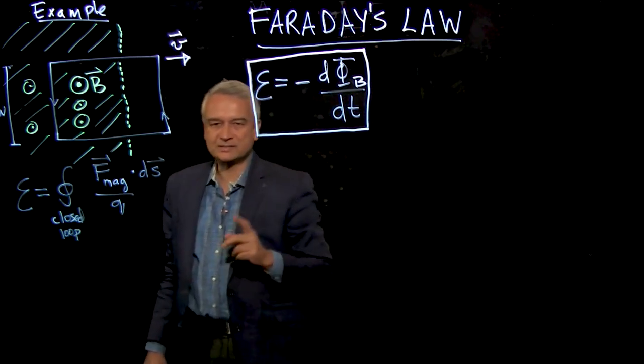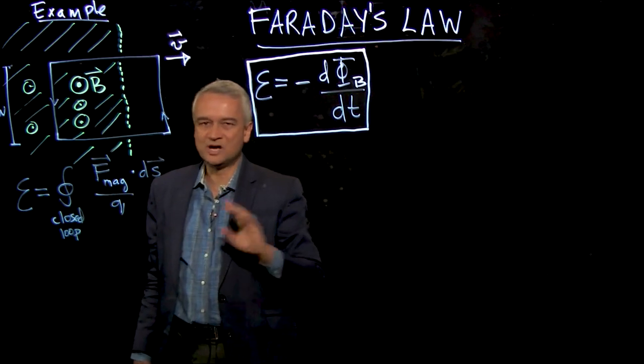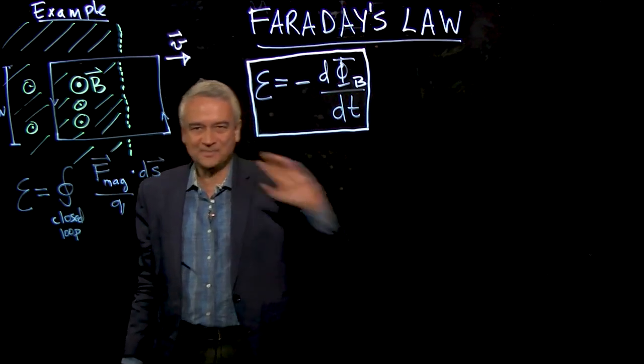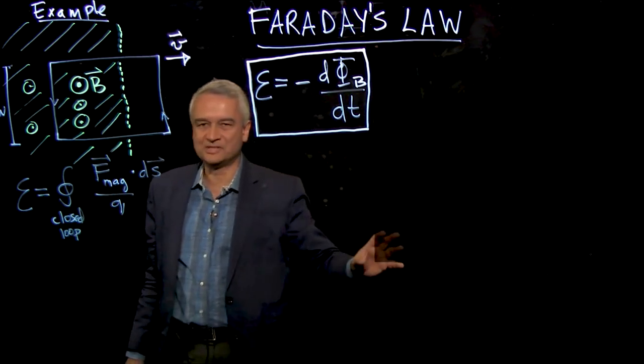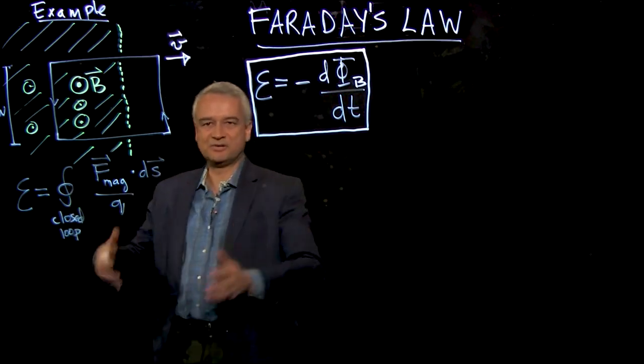But I want to stress that the historical order of things was not that at all. It is certainly absolutely not the case that Faraday figured this out from Einstein's theory of relativity. Faraday was in the 1820s. Einstein's theory of relativity is 1905.